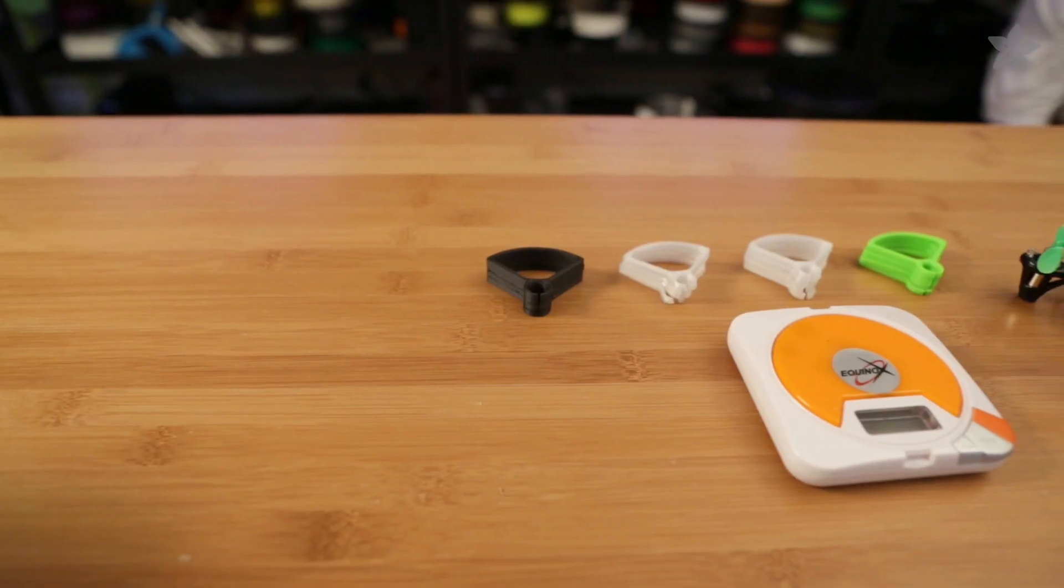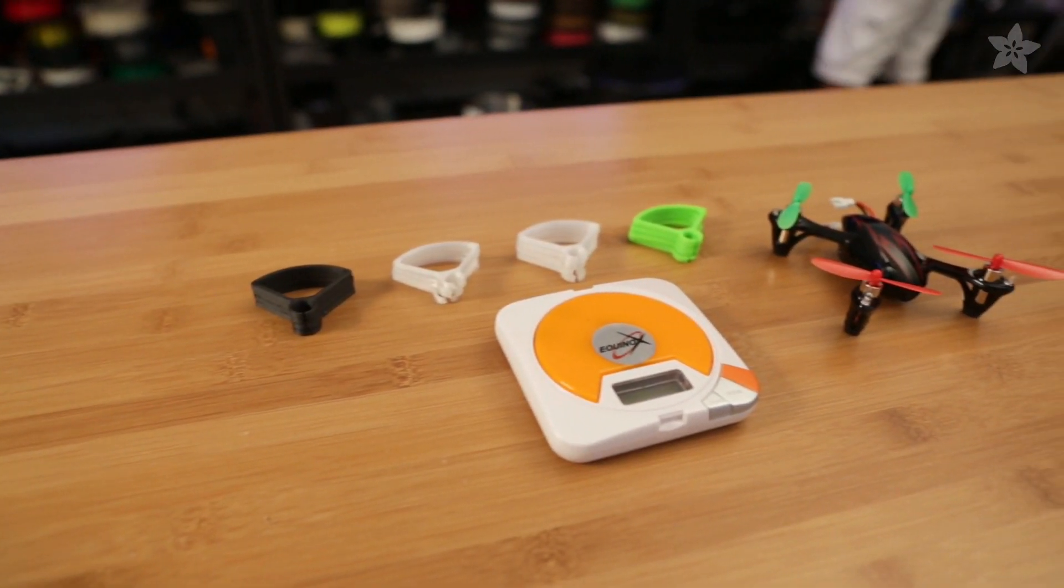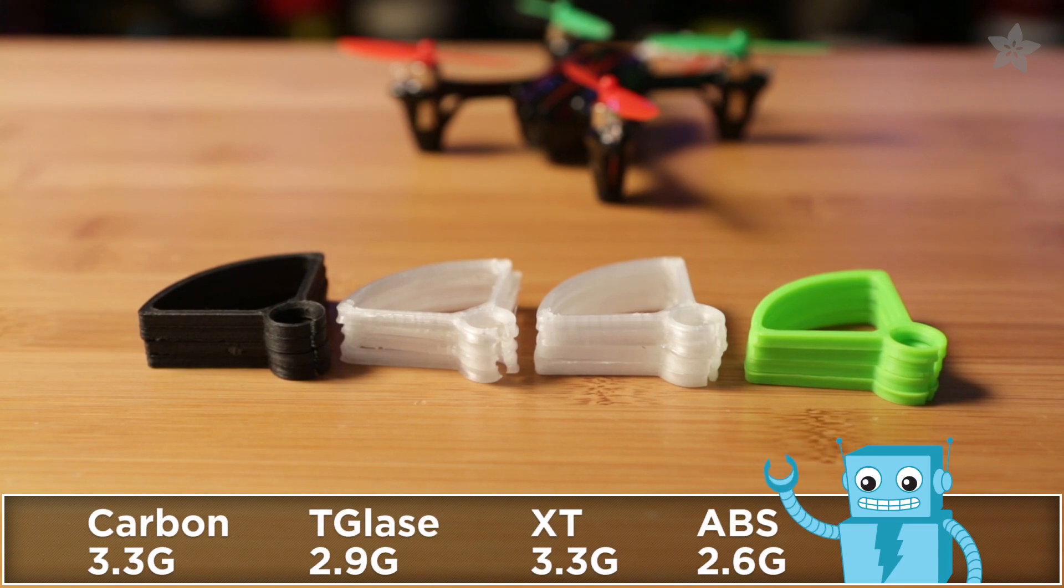Let's take a look at the weight of these printed in all four filaments. Out of the bunch, we can see ABS comes in at the lightest. We kind of expected carbon fiber to weigh lighter here.